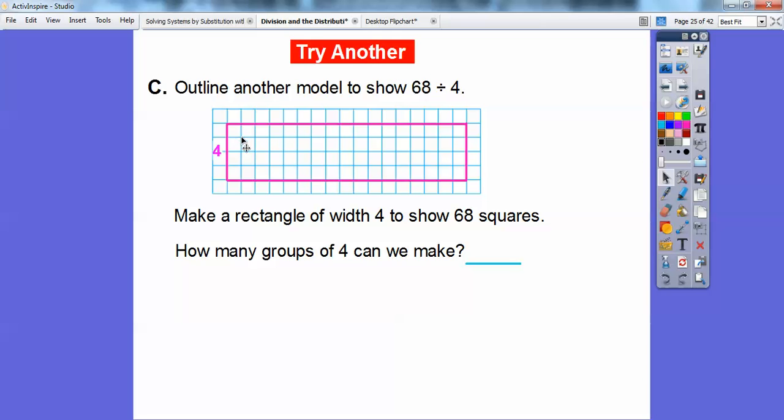Well, there's 1, 2, 3, 4, 5, 6, 7, 8, 9, 10, 11, 12, 13, 14, 15, 16, 17. There are 17 right there. So 68 divided by 4 equals 17.